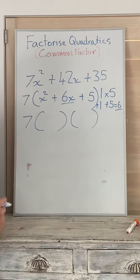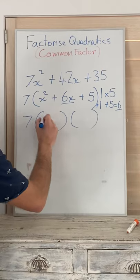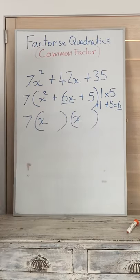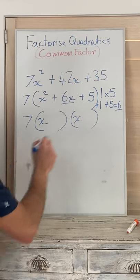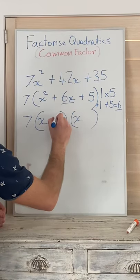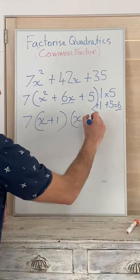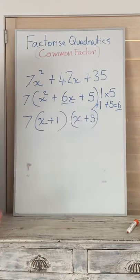Our first term is our x because x times x is x squared, and our next two values are going to be positive 1 and positive 5, and there you go.